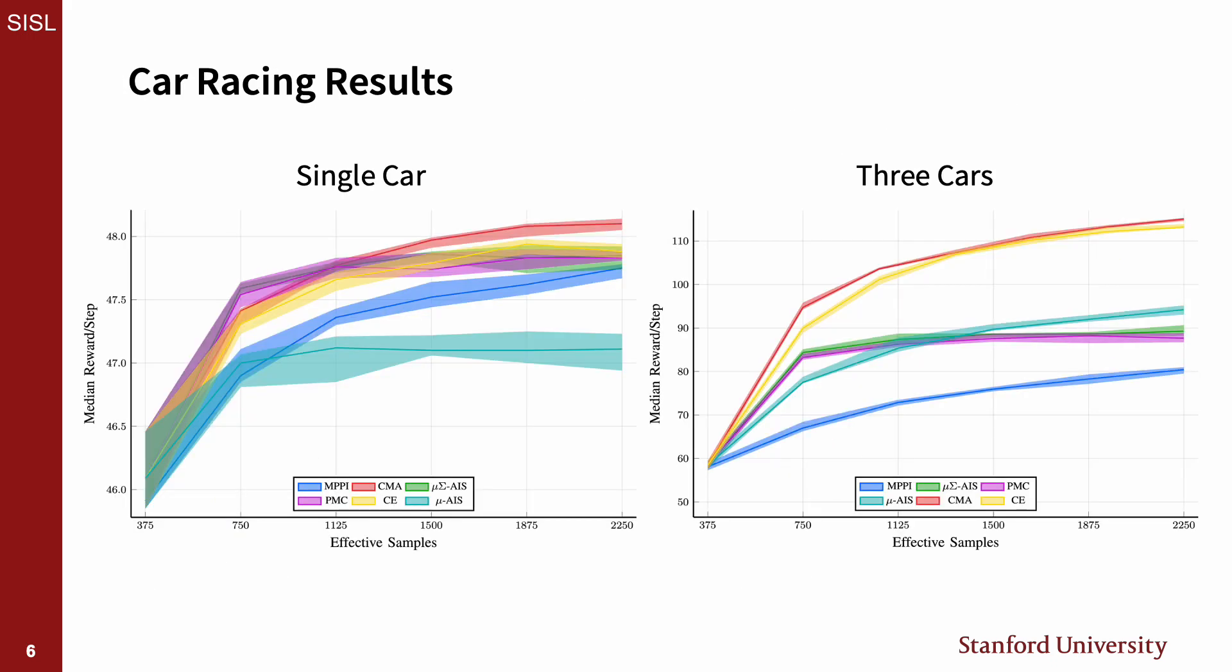Here is a summary of results simulating controlling a single car and three cars around the track. A key result to note is the increasing efficiency of the samples used and how the disparity grows going from controlling one car to three.